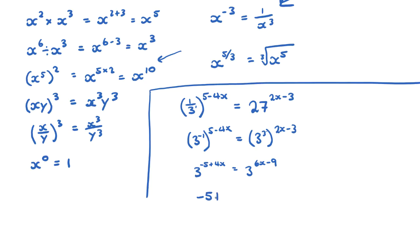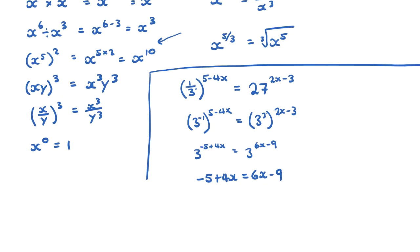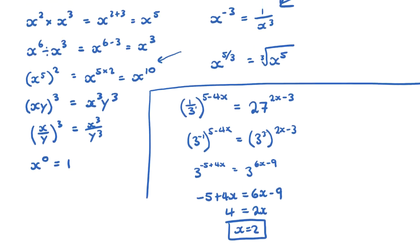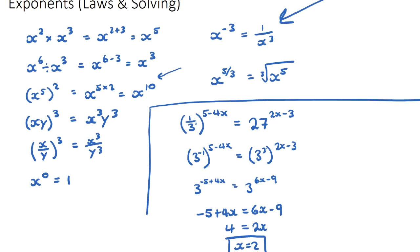Therefore, negative 5 plus 4x must equal 6x minus 9. Solving for x: move 4x to give 2x on the right, and add 9 to negative 5 to get 4, so x equals 2. I've solved for x in this equation using exponent laws.